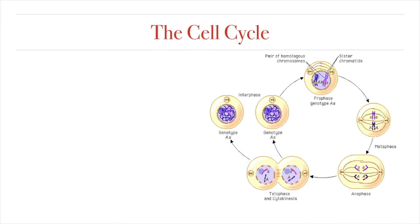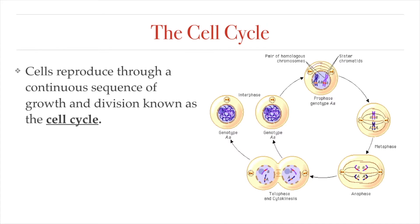When we talk about cell division, we're referring to something called the cell cycle. The cell division part of the cell cycle is only a small part of that process. The cell cycle is basically a continuous sequence during which cells in our body grow during a stage called interphase and then divide through a process called mitosis.